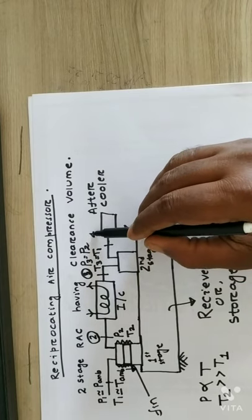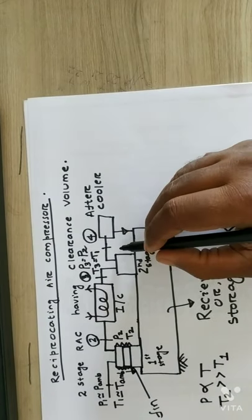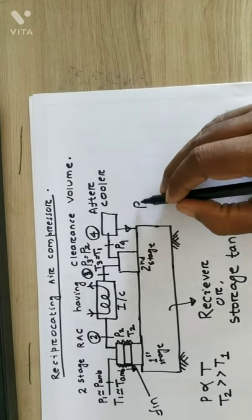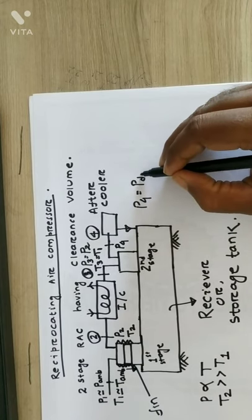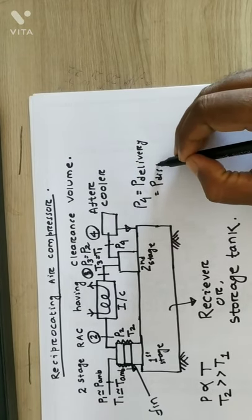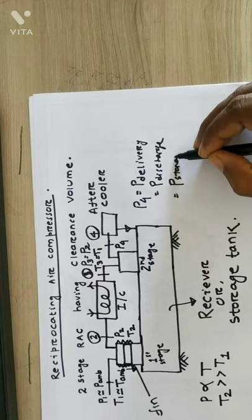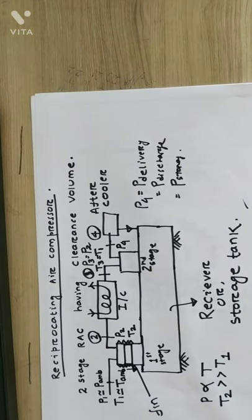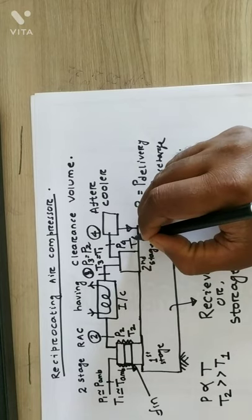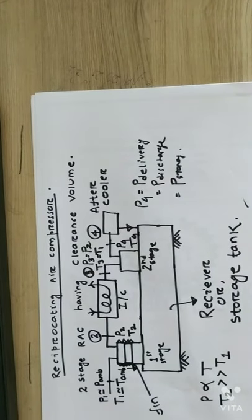State point 4 is after the second stage compressor. The pressure P4 equals the delivery pressure, also called discharge pressure or storage tank pressure — this is the pressure at which air is stored in the tank. There will also be a rise in temperature T4, but an aftercooler arrangement reduces that temperature. This completes the entire block diagram.